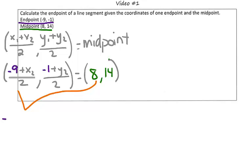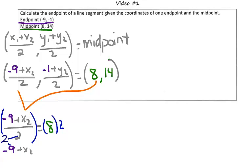We know that negative 9 plus some x value divided by 2 is equal to 8. Our goal is to figure out what is that other x value. So to do this, we can solve this using inverse operations. We're going to go ahead and multiply both sides by 2, and we will get negative 9 plus some x value is equal to 16.